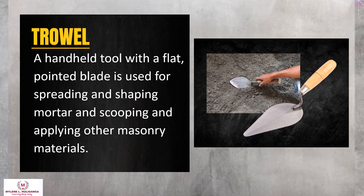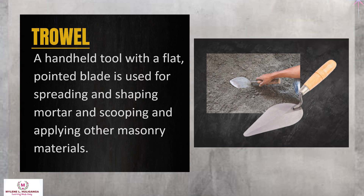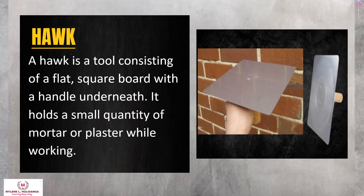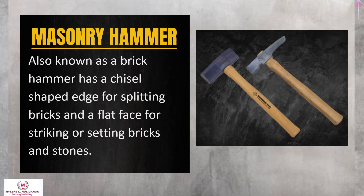Trowel: a handheld tool with a flat, pointed blade used for spreading and shaping mortar and scooping and applying other masonry materials. Float: a hand tool used for smoothing and finishing freshly applied mortar or concrete. Hawk: a tool consisting of a flat, square board with a handle underneath; it holds a small quantity of mortar or plaster while working. Masonry hammer: also known as a brick hammer, has a chisel-shaped edge for splitting bricks and a flat face for striking or setting bricks and stones.